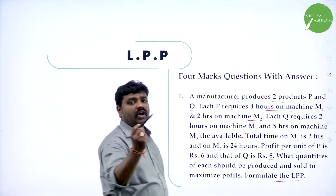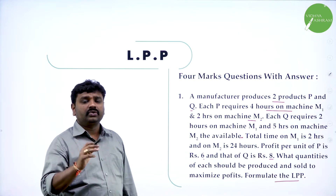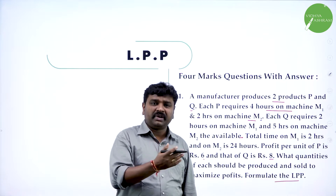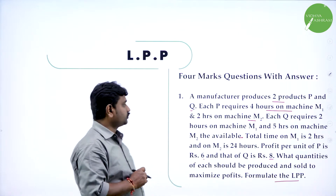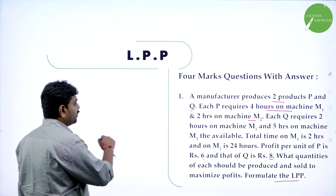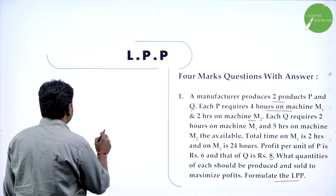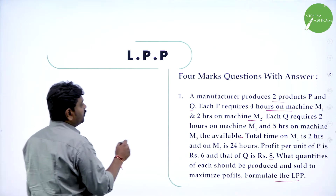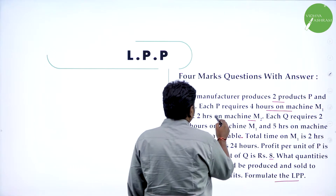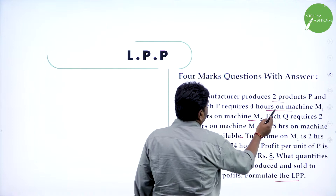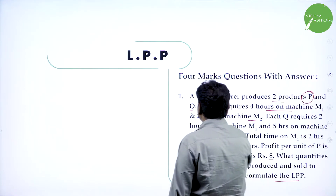They are asking you to formulate LPP. As I taught you, if you want to formulate LPP, convert this to a table. So if it's a manufacturing problem, the types of products they are producing — here they are producing two types of products, one is P and the other one is Q.